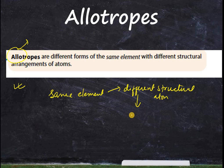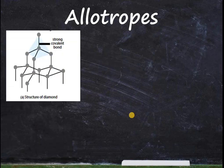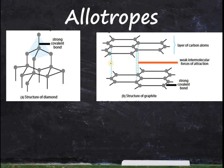What do I mean by same element with different structure of the atom? For example, carbon can exist in different forms. If carbon is arranged so that one carbon is surrounded by four carbon atoms, it is called diamond. Now, if the same carbon atoms are bonded to just three carbon atoms and arranged in layers, it becomes graphite.